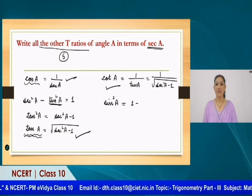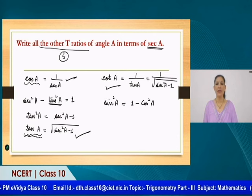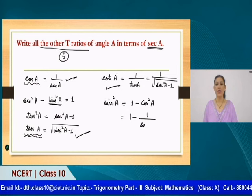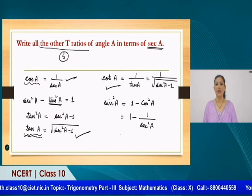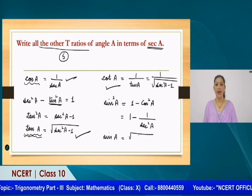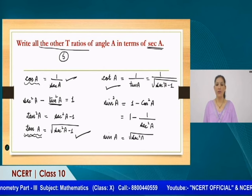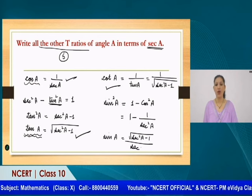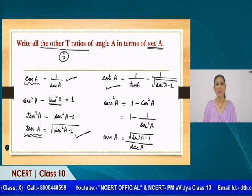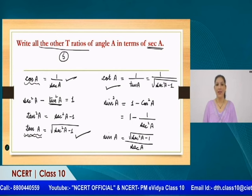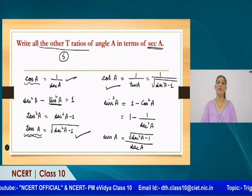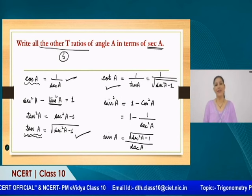Now for sin A: using the identity sin²A + cos²A = 1 and substituting cos A = 1/sec A, we get sin A = √(sec²A − 1) / sec A. Then cosecant A, being the reciprocal of sin A, becomes sec A / √(sec²A − 1). This is a good way to write all the T-ratios in terms of any one of the T-ratios.